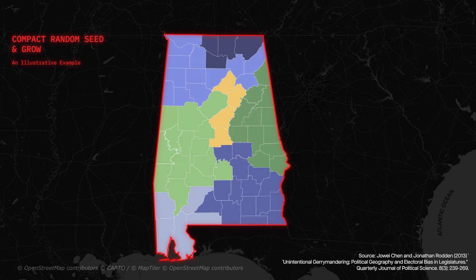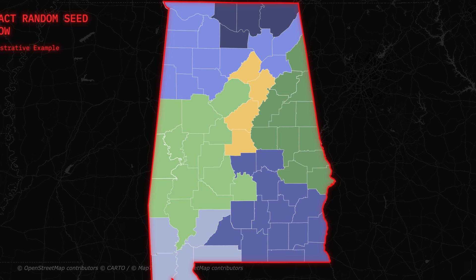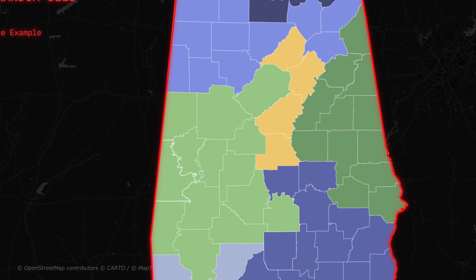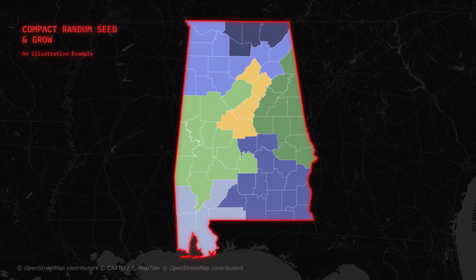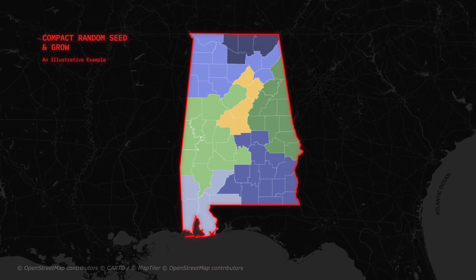but it doesn't guarantee that the populations will be the same across the board. To fix that, Compact Random Seed and Grow looks at adjacent districts with too much deviation between them and finds a county that's furthest from the centroid of both districts, and swaps it from the district with a greater population to the district with a smaller population. We repeat this swapping again and again until we have parity. And at the end of the day, we have a map generated by Compact Random Seed and Grow.